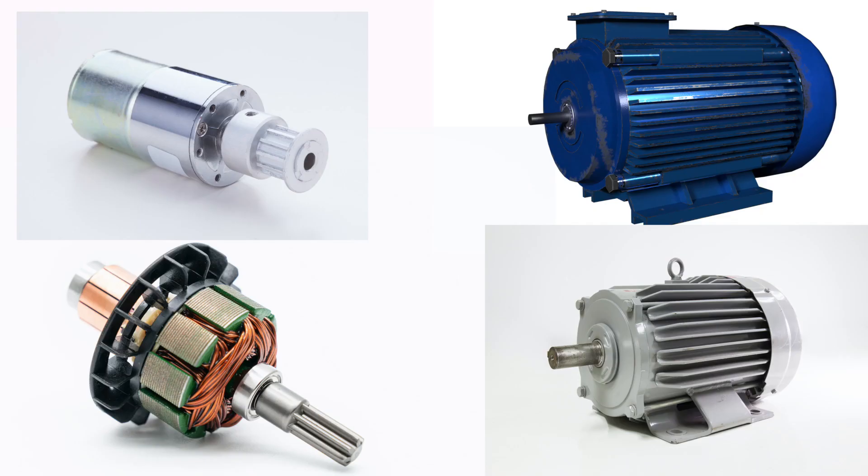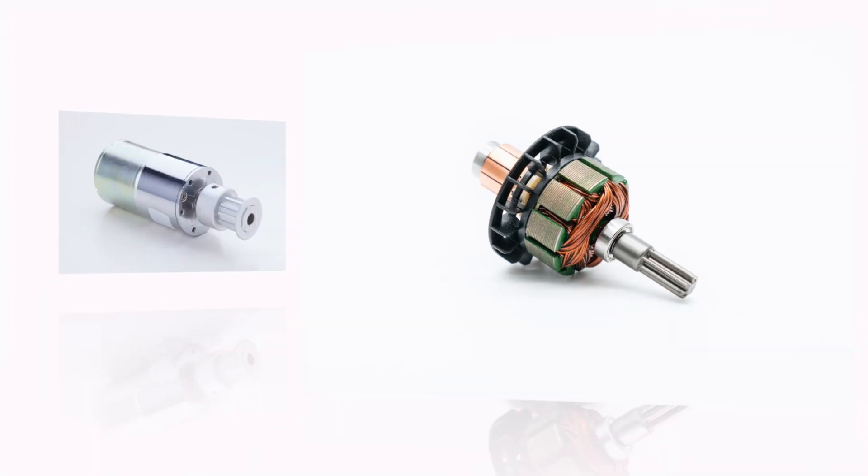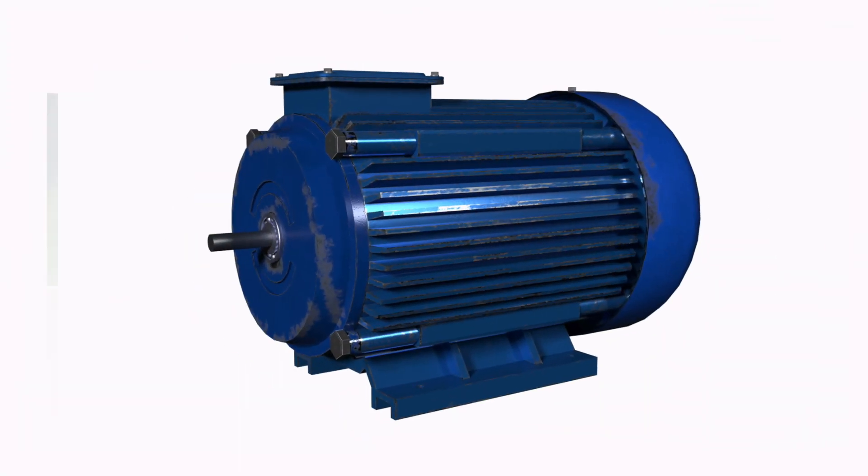There are several types of DC motors which are classified by their field type. They are the Permanent Magnet, Series, Shunt and Compound.